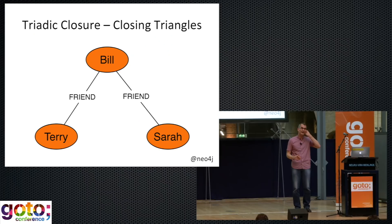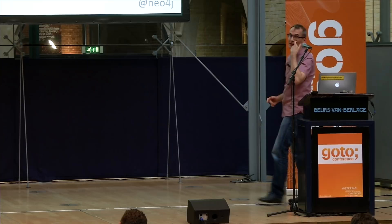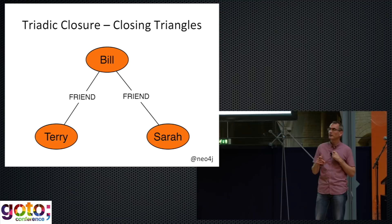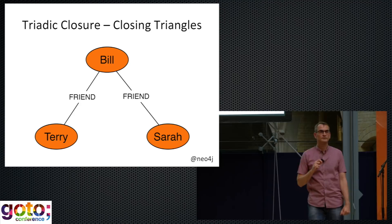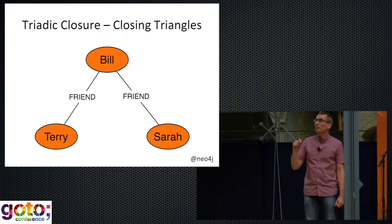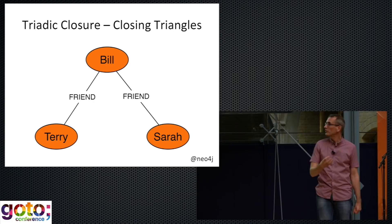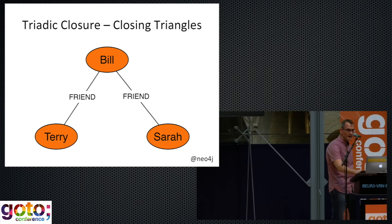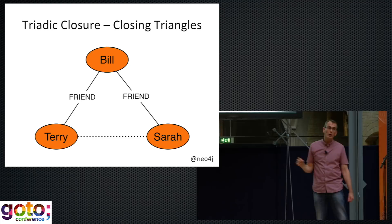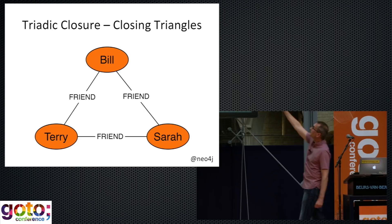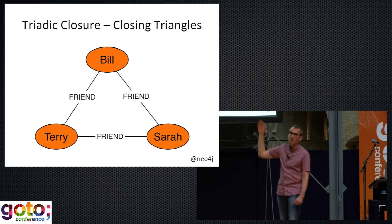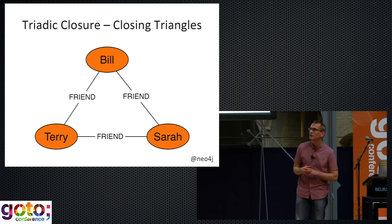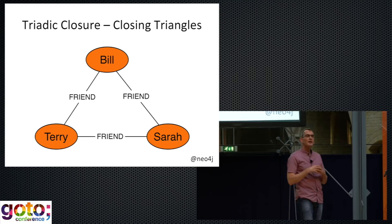Here's a very simple social network: Terry, Bill, and Sarah. Terry and Sarah have a friend in common, Bill. They don't currently know one another, but because of this mutual friend, there's a higher chance than normal that at some point in the future Terry and Sarah will meet one another and may in fact become friends. There's a greater than normal chance that we will close this triangle — that Terry and Sarah will become friends because they have both the means and the opportunity. Because they both know Bill and most likely trust Bill, they probably also trust the people that Bill trusts.